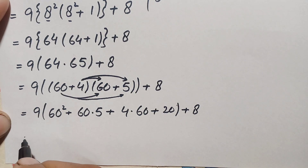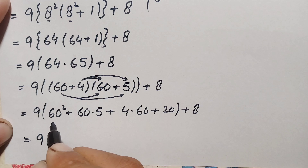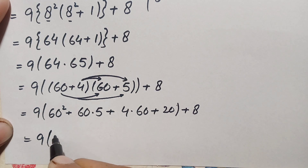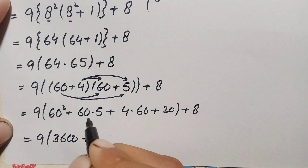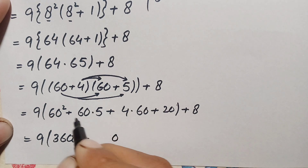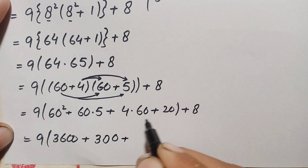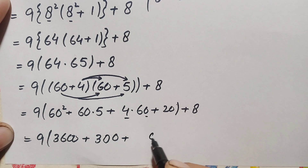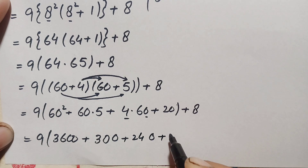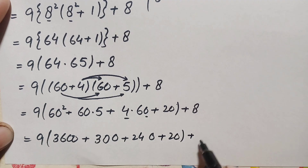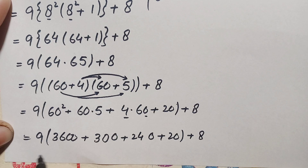Computing each term: 60 squared is 3600; 5 times 60 is 300; 4 times 60 is 240; and 4 times 5 is 20. So we have 9 times the quantity 3600 plus 300 plus 240 plus 20 plus 8.